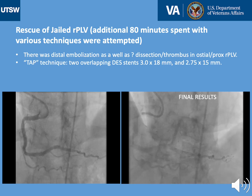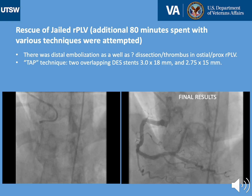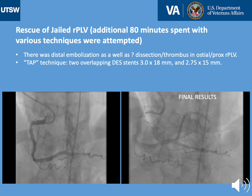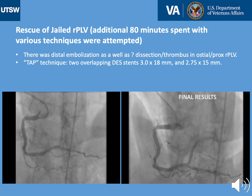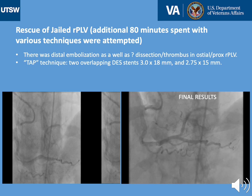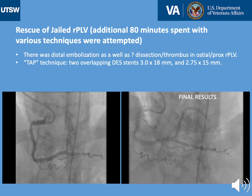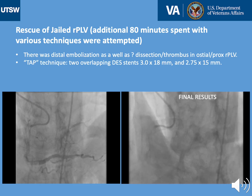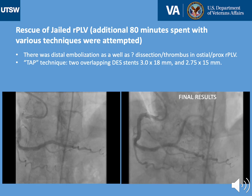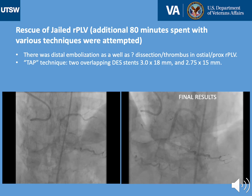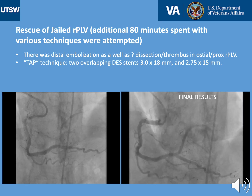We spent a significant amount of time working on optimizing and rescuing this branch. We performed a T-stent protrusion stenting technique with two overlapping stents in the ostial and proximal PLV branch. However, we were unable to rescue the distal PLV, and despite multiple attempts, given that the patient was chest-pain-free and hemodynamically stable, we aborted the procedure.